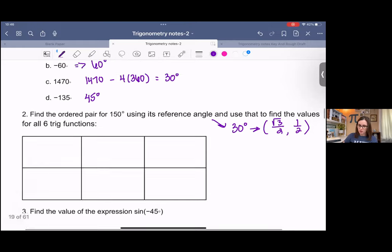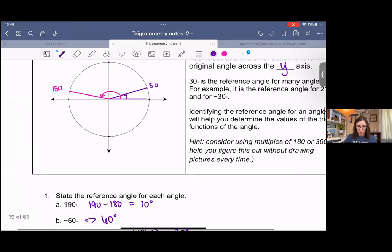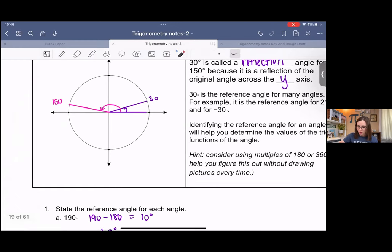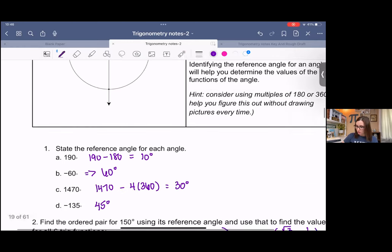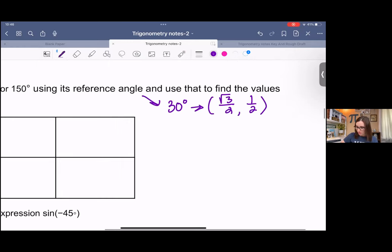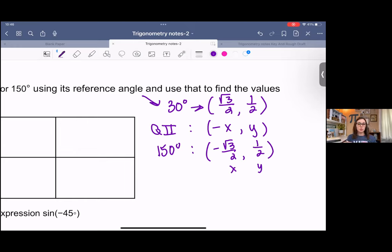Now, 150 degrees, if I were to draw a picture of it, which I did, thank goodness, is over here in quadrant 2. That means in quadrant 2, I'm going to have a negative x and a positive y. So for 150 degrees, I'm going to have negative root 3 over 2 and positive 1 half. This gives me x and y.